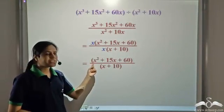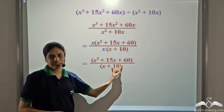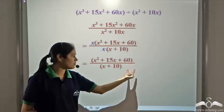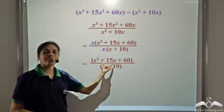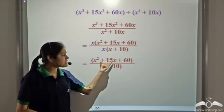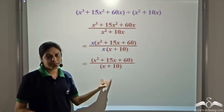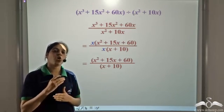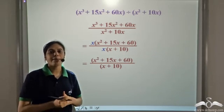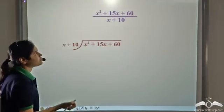Now try to factorize x squared plus 15x plus 60. You will not be able to factorize it further, so we don't have any further common factors between the numerator and the denominator. Since it is still in division form, we need to divide it further using the long division method.